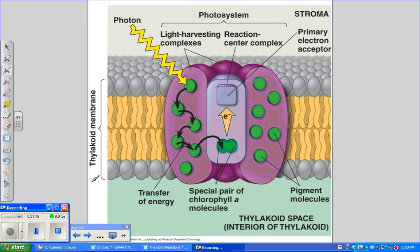When a photon strikes a pigment molecule in a light harvesting complex, the energy is passed from molecule to molecule until it reaches the reaction center complex. Here, an excited electron from the special pair of chlorophyll A molecules is transferred to the primary electron acceptor. This transfer from an electron from the reaction center chlorophyll A to the primary electron acceptor is the first step of the light reaction.